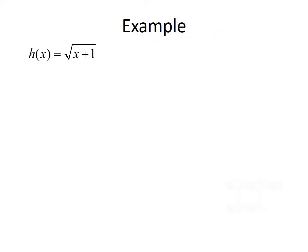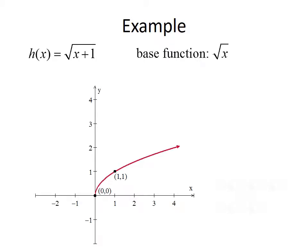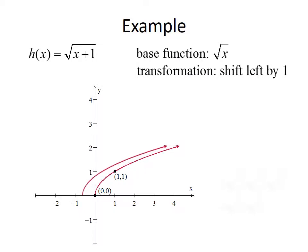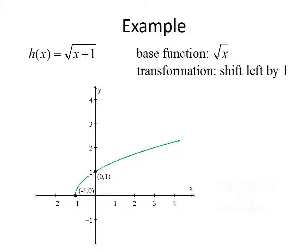Let's look at an example: h(x) = √(x + 1). This looks like the square root function, so we're going to start with that as our base function. From our library of functions, we know what √x looks like. Since we're adding 1 inside the square root sign, that's going to give us a shift to the left by 1. So the graph of h(x) = √(x + 1) is the graph in green, with points (-1, 0) and (0, 1).